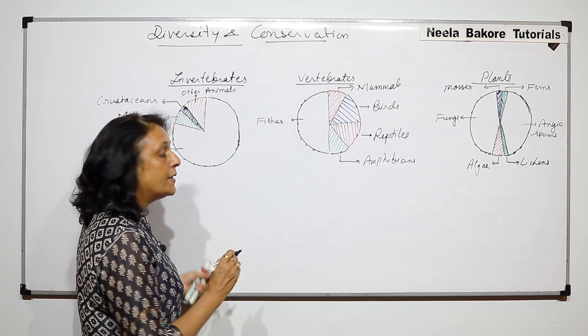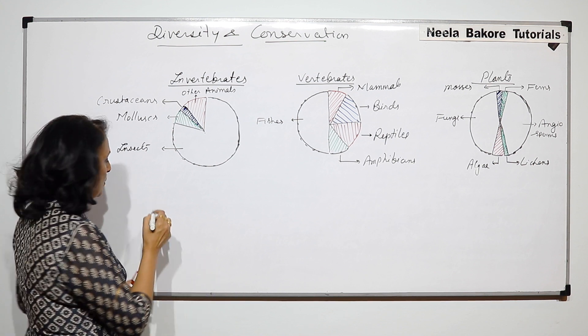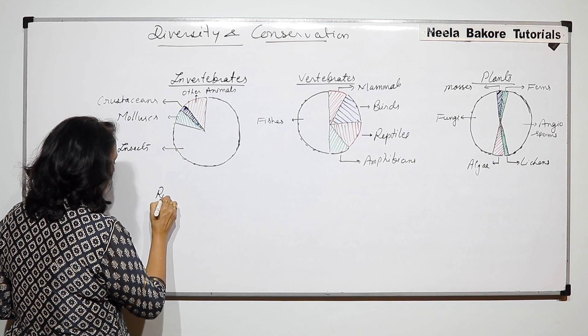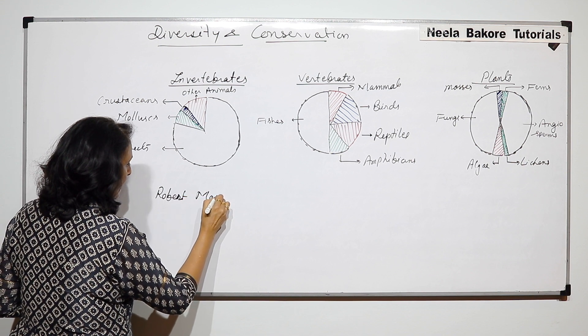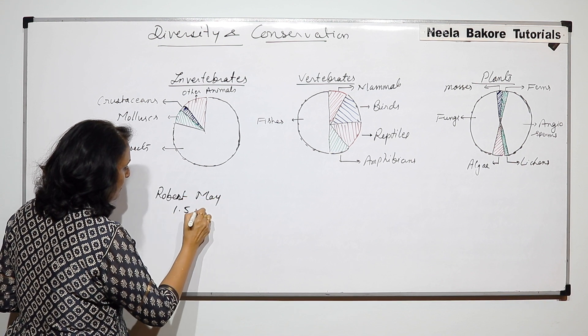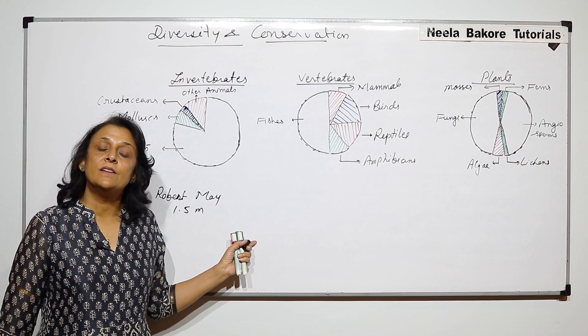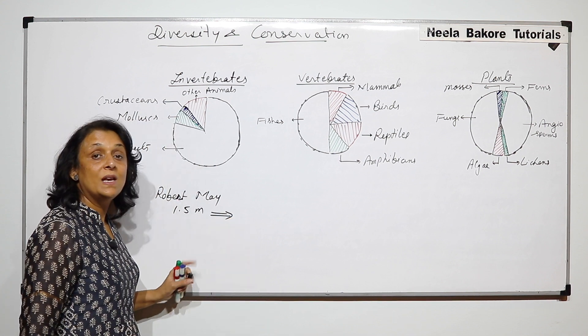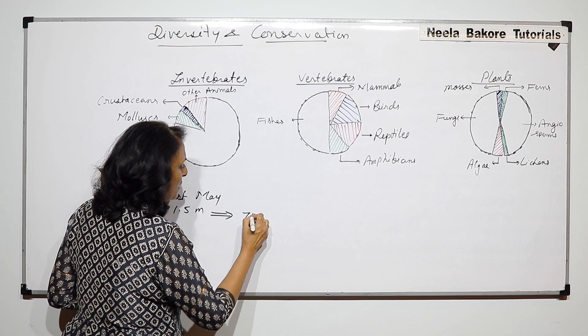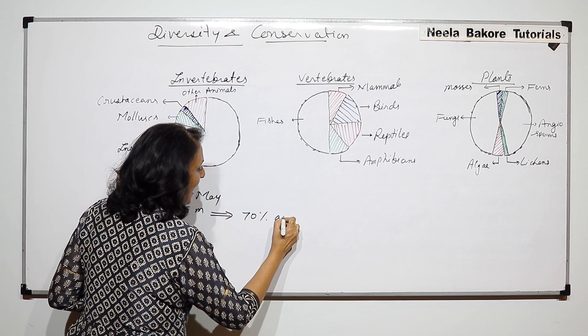We have already talked about the number of organisms which have been discovered. According to Robert May, 1.5 million organisms have been discovered. And out of this 1.5 million, about 70% or slightly more than 70% are animals.